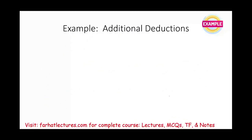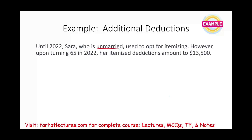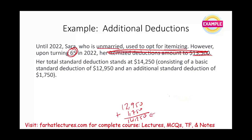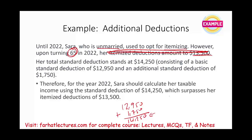Let's look at an example illustrating the additional standard deduction. Sarah, who is single, used to itemize her deductions. However, upon turning 65, her itemized deductions were $13,200. Her standard deduction as single is $12,950, so you'd say she'll itemize. But remember — because she turned 65, in addition to the $12,950, she qualifies for the additional $1,750. Now her standard deduction is $14,250. She's going to say, I will not use my itemized deductions — I'll take the government deduction of $14,250 because it's higher than my itemized deductions.